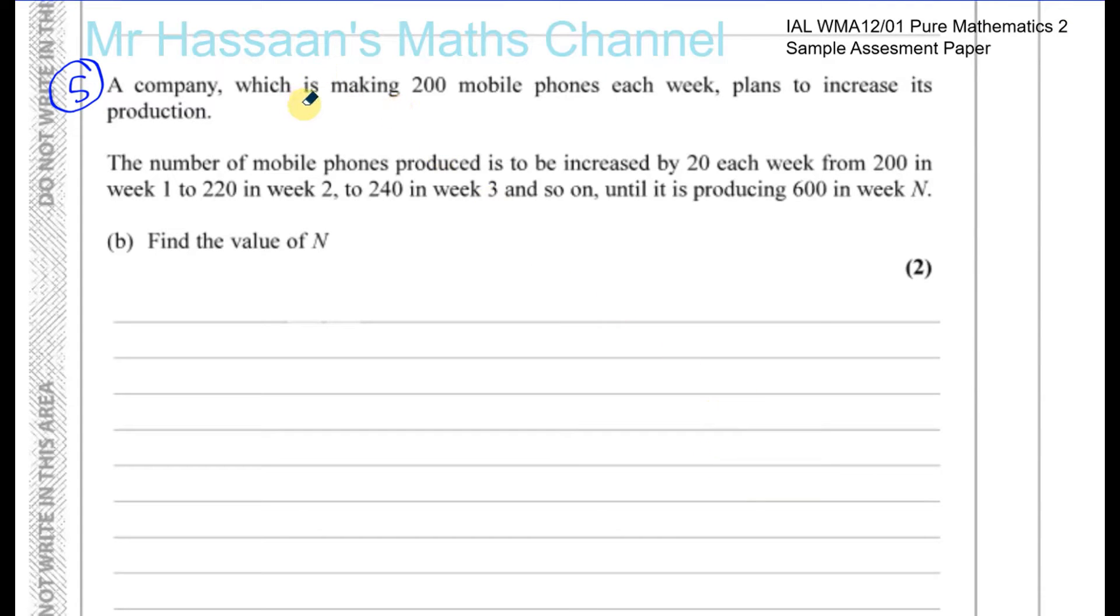Okay, now for question number 5 of the sample assessment paper, Pure Maths 2, International A Level. A company which is making 200 mobile phones each week plans to increase its production. The number of mobile phones produced is to be increased by 20 each week from 200 in week 1.